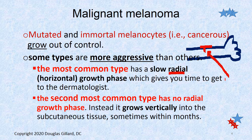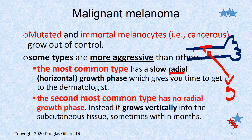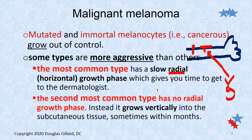The second most common type is the nodular form of this disease. This one has no radial growth phase — it just grows straight down — and therefore within months, sometimes just a couple of months, you start seeing a big bump, a nodule. By the time you try to get in to see a specialist, this could already be metastasized in some cases. It's a really bad one, and that's the second most common type of malignant melanoma.